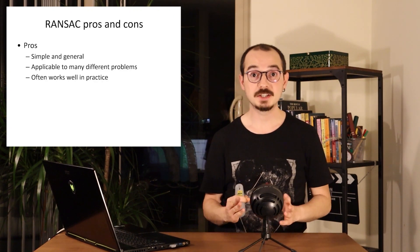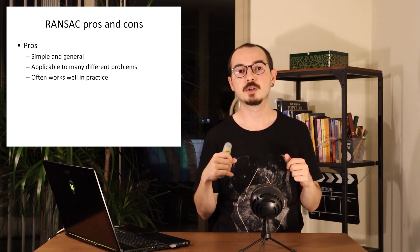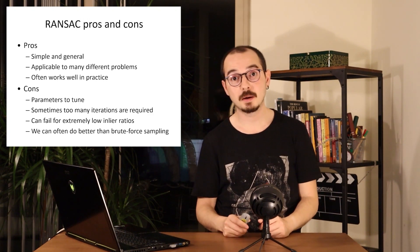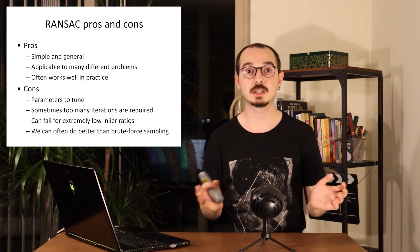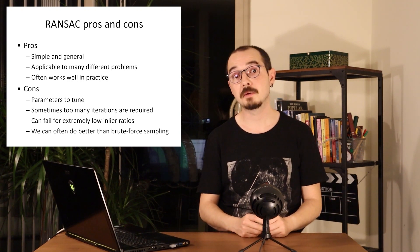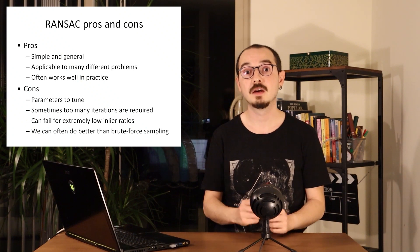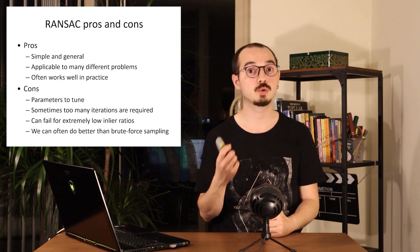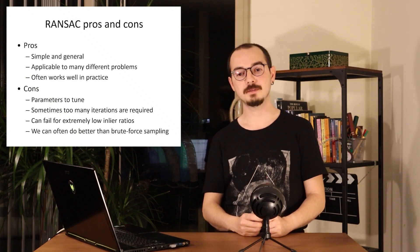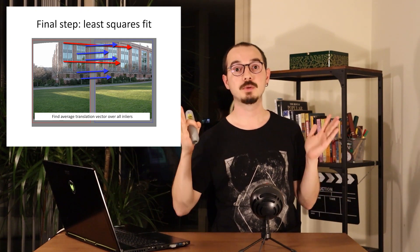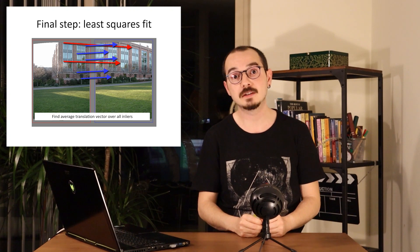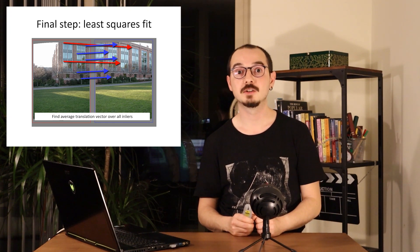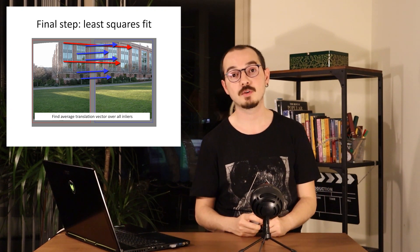In summary, RANSAC is simple and general. It can be applied to many different types of problems because the core idea is simply: generate a hypothesis and test it, many times over. It has some parameters to tune, which can be a challenge to generalize. In cases with very high outlier ratios or when many points are needed to generate a hypothesis, it can be impractical in terms of running time. After RANSAC identifies the best hypothesis and the corresponding set of inliers, we can then apply our least squares fit to get a precise estimation of the transformation between two images.